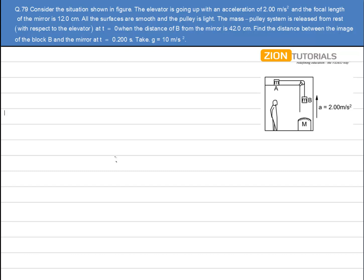Consider the situation shown in figure. The elevator is going up with an acceleration of 2 meters per second squared and the focal length of the mirror is 12 cm. All the surfaces are smooth and the pulley is light. The mass pulley system is released from rest at t equal to 0 when the distance of B from the mirror is 42 cm. Find the distance between the image of the block B and the mirror at t equal to 0.2 seconds.